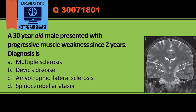A 30-year-old male presented with progressive muscle weakness since two years. What is the diagnosis? First of all, here we see that this is an MRI because the bone is black. This is a T2-weighted MRI because the CSF in the lateral ventricles and sulcal spaces is white.